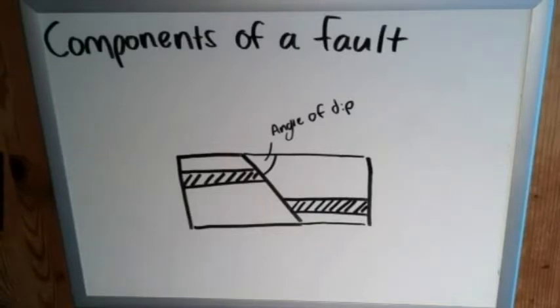Side note, usually normal faults have much steeper angles of dip, usually somewhere between the 85 to 75 degrees range, whereas reverse faults are generally somewhere more around 45 degrees or they can get as low as that.